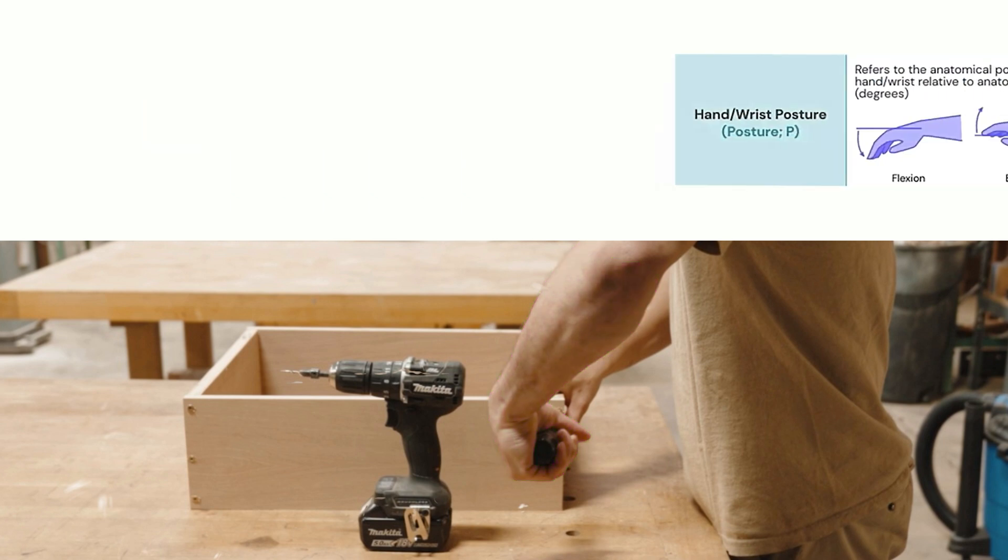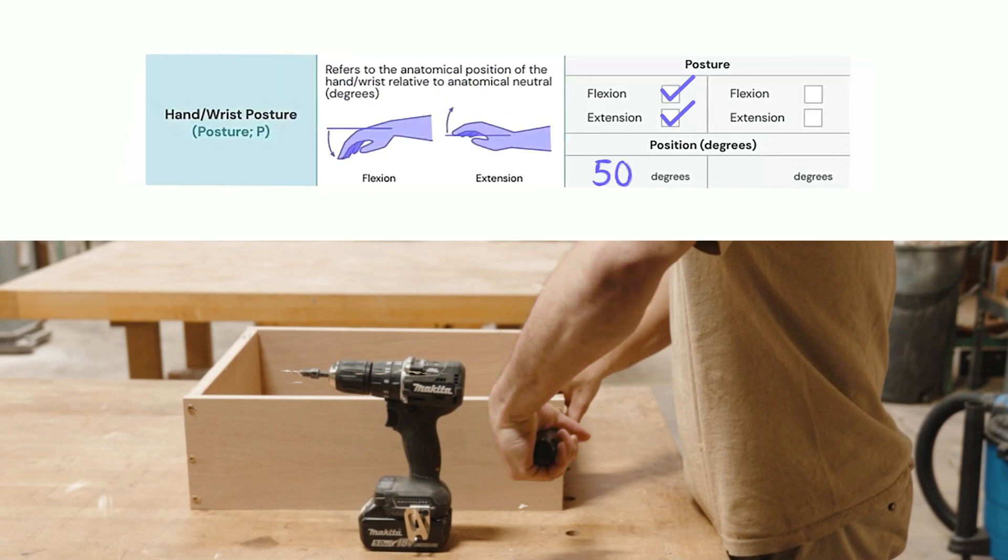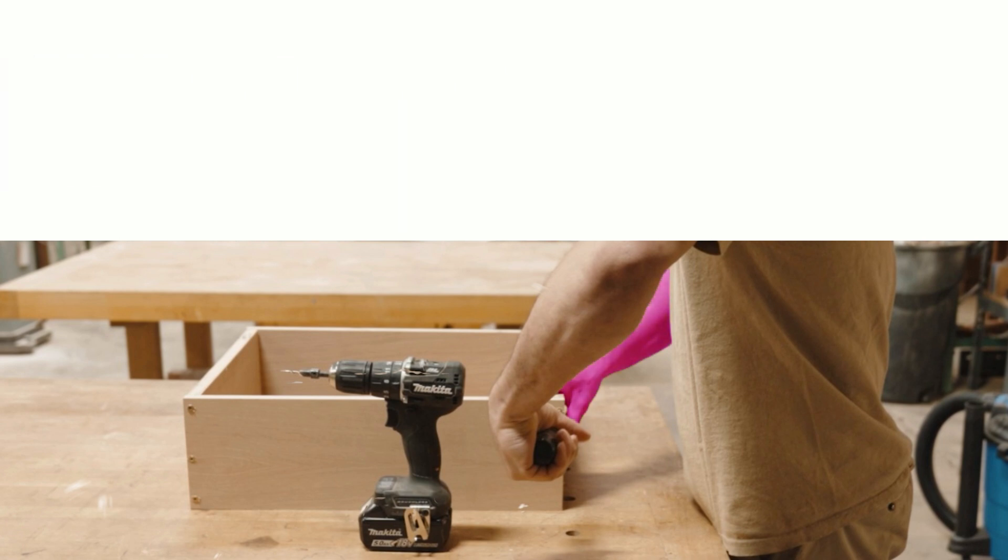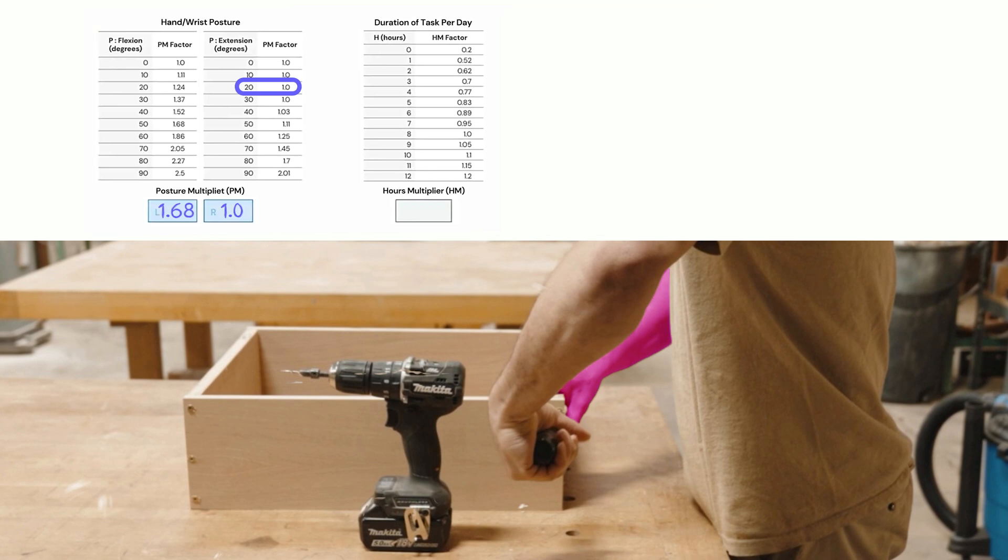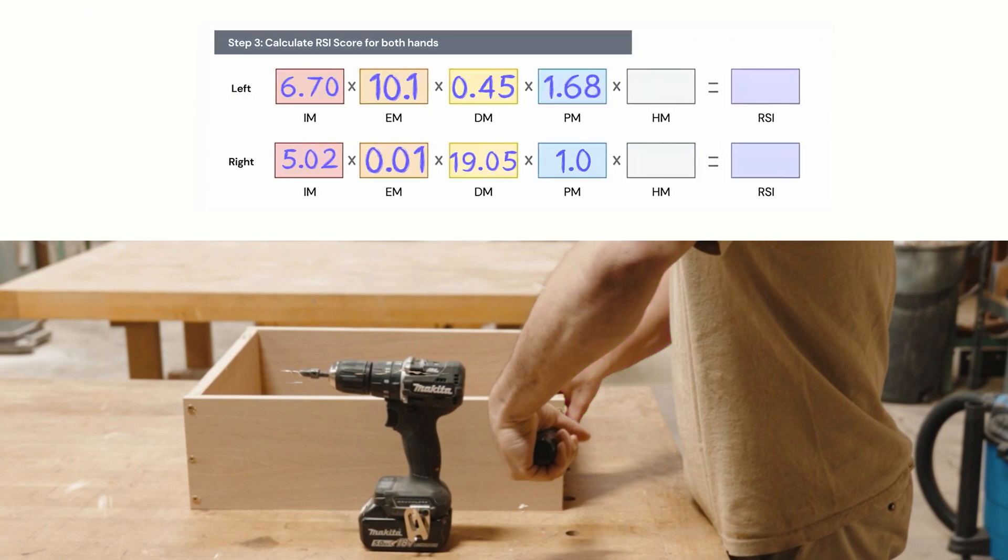Keep moving. Now we're in the posture for the wrist and hand for the right hand. And again, this is a stabilizing task for the right hand. All he's doing is holding almost neutral. We'll give him a little bit of extension. So we find the corresponding number on that same conversion table. We drag it down into the right blue box. We drag that into step three, and we're almost done.